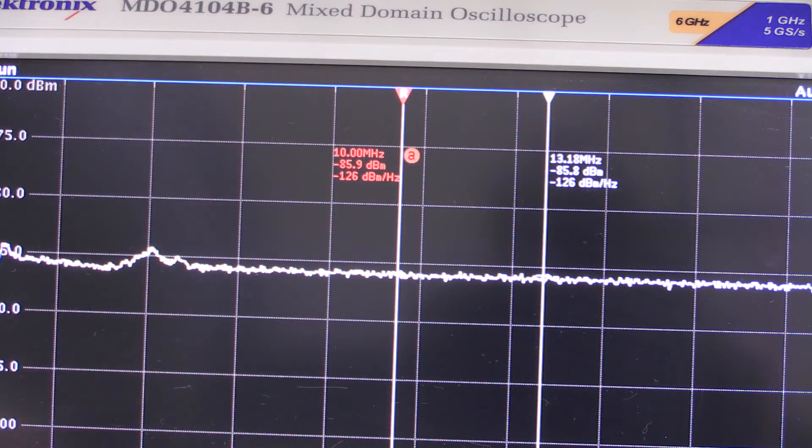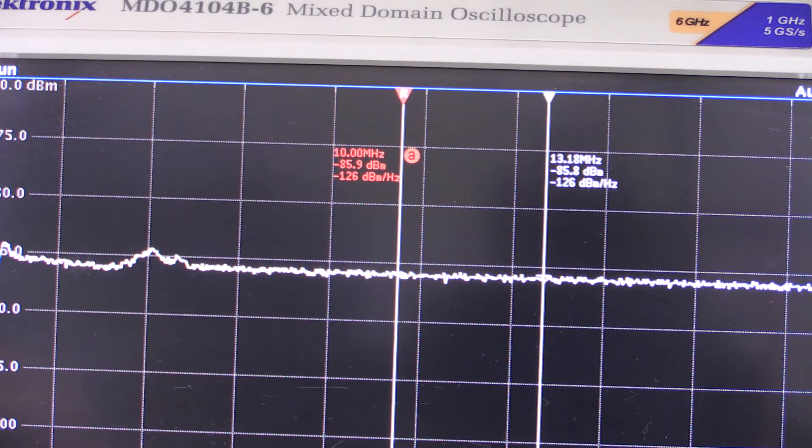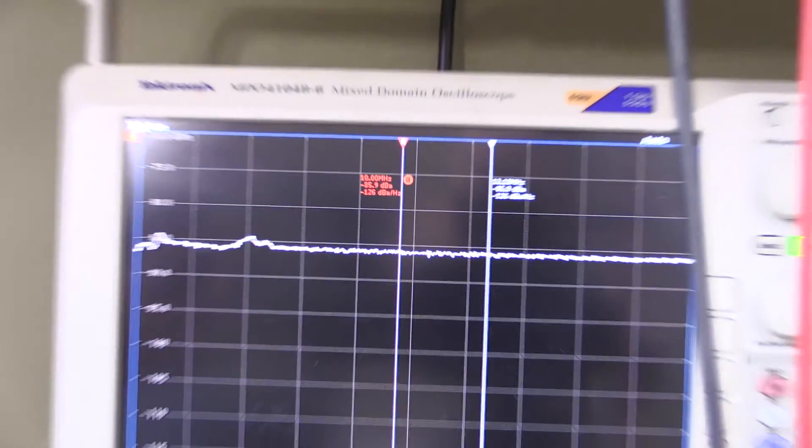It looks like our trace has settled here. What do we have now? Negative 85.9 dBm. Let's call this negative 85.9. Plugging this into the calculator here, let me zoom out again and show you what I'm doing.